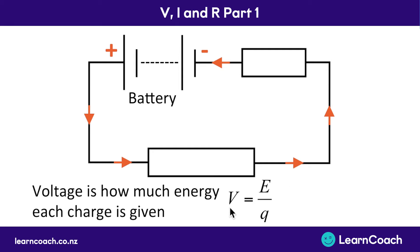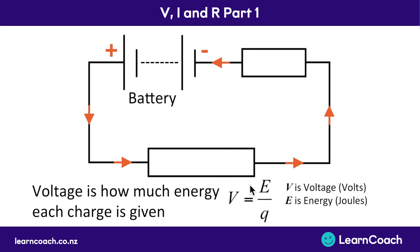Looking at this formula: V is voltage, measured in volts. E at the top is energy, measured in joules, and Q at the bottom is charge. The unit for charge is coulombs. So you can always work out voltage based on its charge and based on how much energy each of those charges has, using the formula V = E/Q.